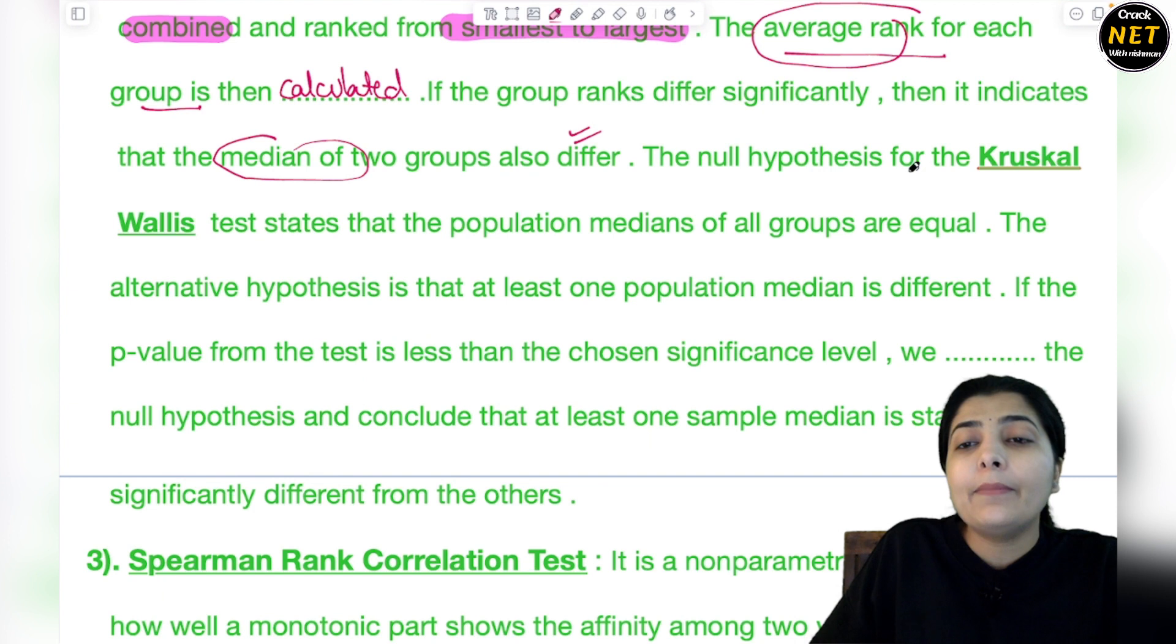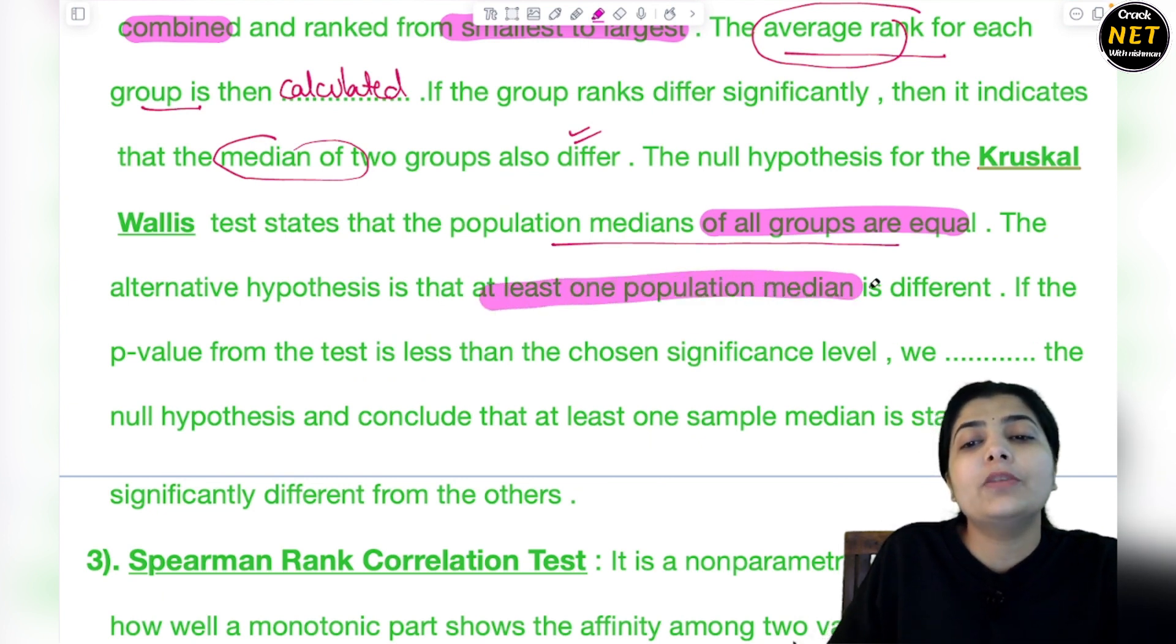If the group ranks differ significantly, then it indicates that the median of the two groups also differs. The median will not be the same; the median will differ. The null hypothesis for the Kruskal test states that population medians of all groups are equal. In the null hypothesis we assume they're equal. In the alternative hypothesis, we assume at least one population median is different.